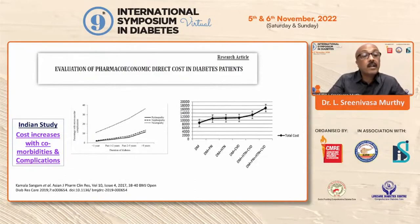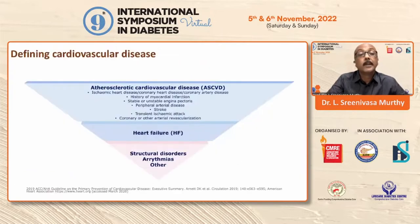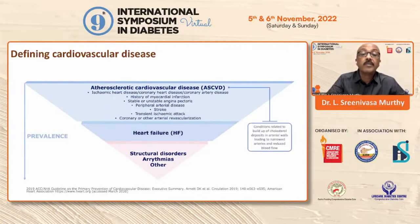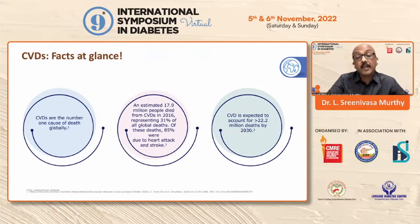Look at this Indian study: the cost increases with comorbidities and complications. If you don't diagnose the comorbidities and don't take the cardiometabolic approach initially, the total cost due to complications will add on to the patient. Cardiovascular diseases — we know the prevalence is huge in our country. They are the number one cause of death globally, with CVDs accounting for 31% of all global deaths, of which 85% are due to MI and stroke.